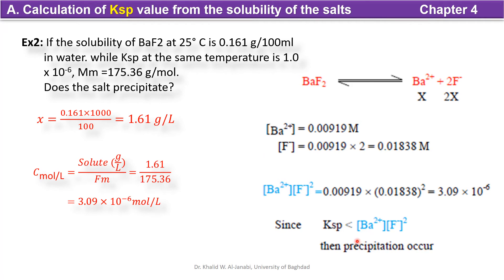We are going to compare the value of Q, the ionic product of the salt ions, with the value of Ksp at the same temperature. Since the Q value is more than the Ksp value, then the precipitation will occur.